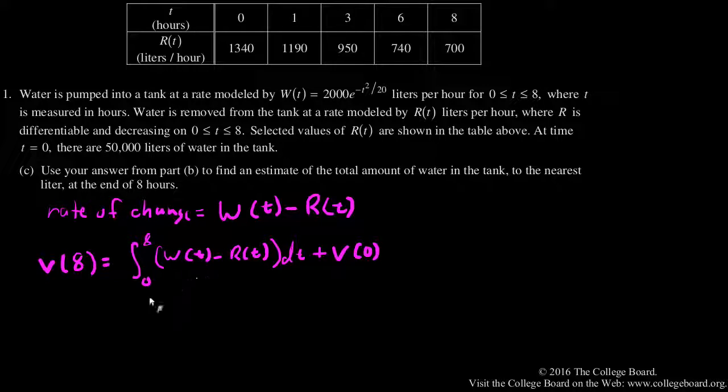I can break up this integral as the integral from 0 to 8 of W(t) dt minus the integral from 0 to 8 of R(t) dt plus that starting value, 50,000.